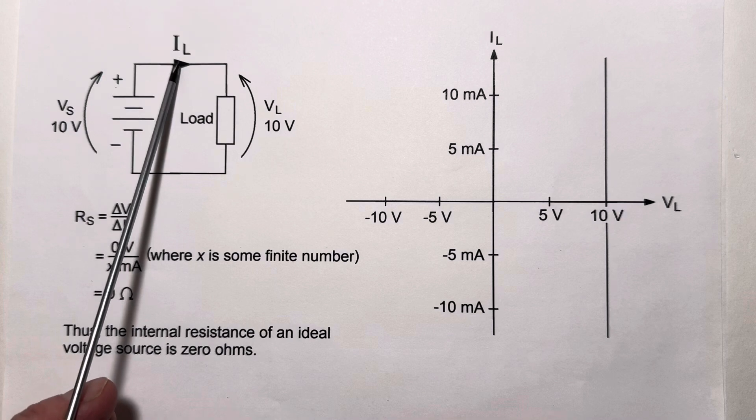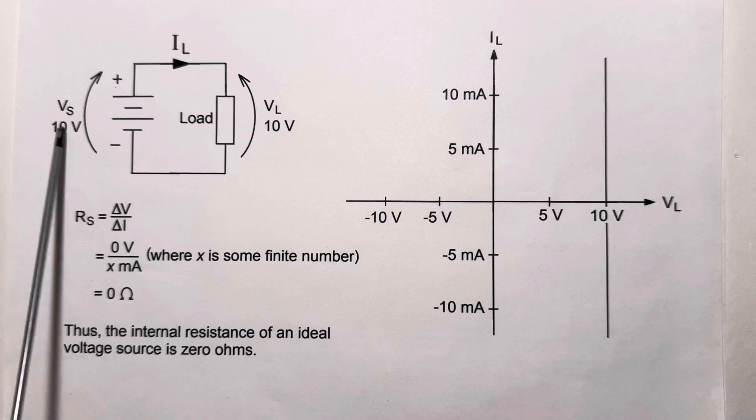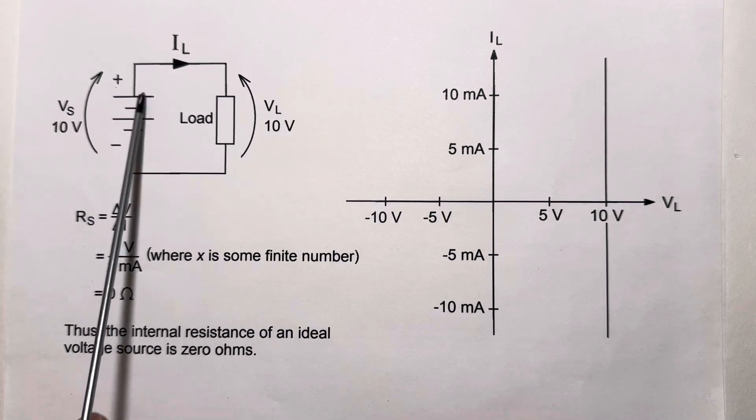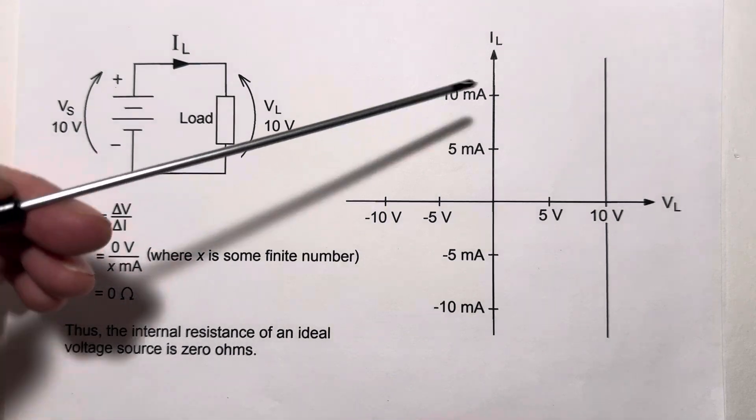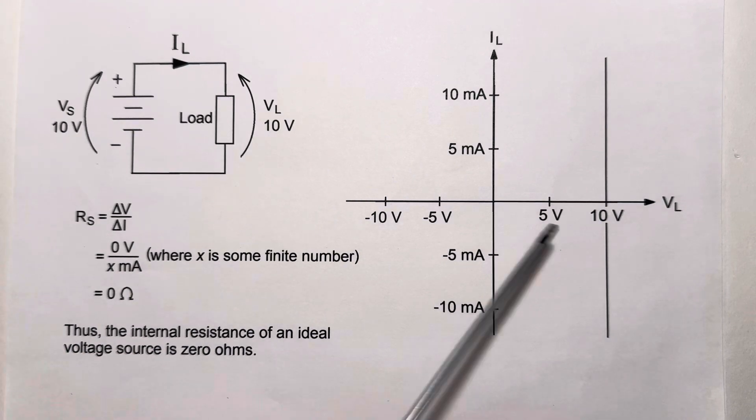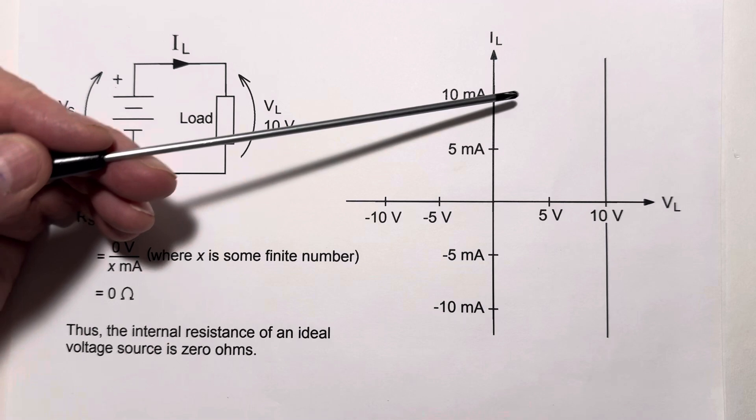It could be zero, it could be 10 amps, it could be negative 20 amps, it doesn't matter. We still have 10 volts, no matter what the load current is. Graphically, we represent that with this line. We have a 10 volt source, it maintains a 10 volt load voltage, regardless of the current.